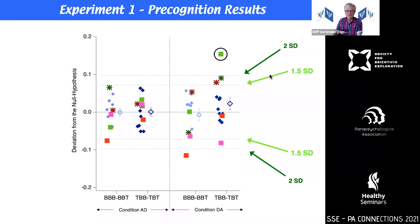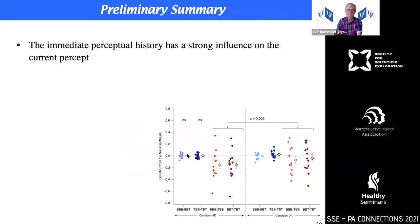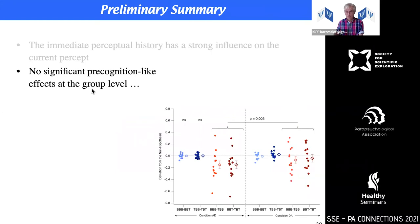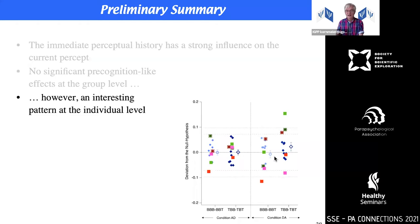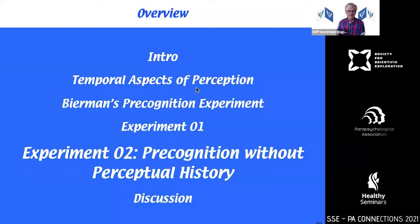There was one participant who deviated two standard deviations, but only in one scenario. However, we also had another participant who deviated at least 1.5 standard deviations in two scenarios — we regard this as interesting. To summarize: the immediate perceptual history has a strong influence on the current percept, there are no significant precognition-like effects at the group level, but there is an interesting pattern at the individual level.